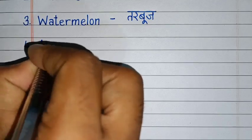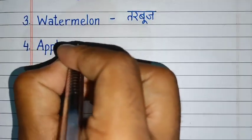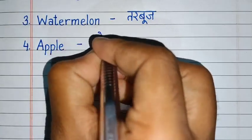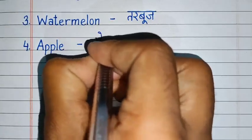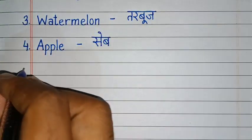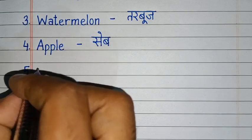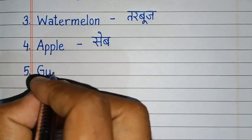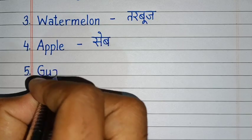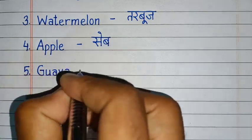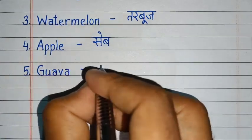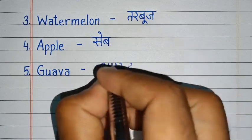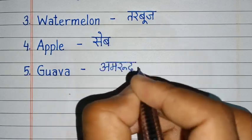A, W, P, L, E. Apple. Apple means seb. G, U, A, V, A. Guava. Guava means amrood.